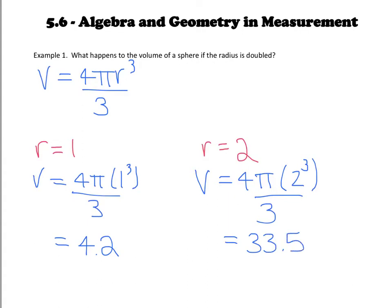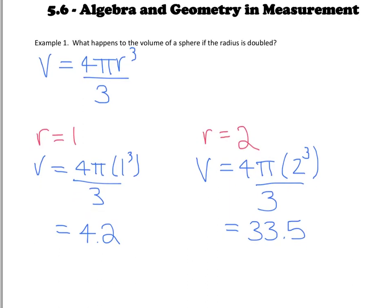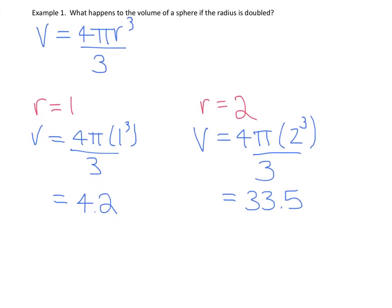Now we just want to compare those two values. So the best way to actually compare them is to divide. So if we take 33.5 and we divide it by 4.2, I want you to see that that gives us 8. So this means that if we double the radius in a sphere, the volume is actually 8 times as much.